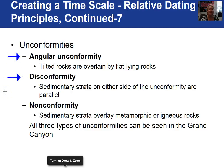The second type of unconformity is a disconformity. In this situation we still have all sedimentary rocks. However, the sedimentary rocks are flat-lying below the unconformity and flat-lying above the unconformity. These disconformities can be a little difficult to distinguish in the field if there isn't a nice erosional surface.